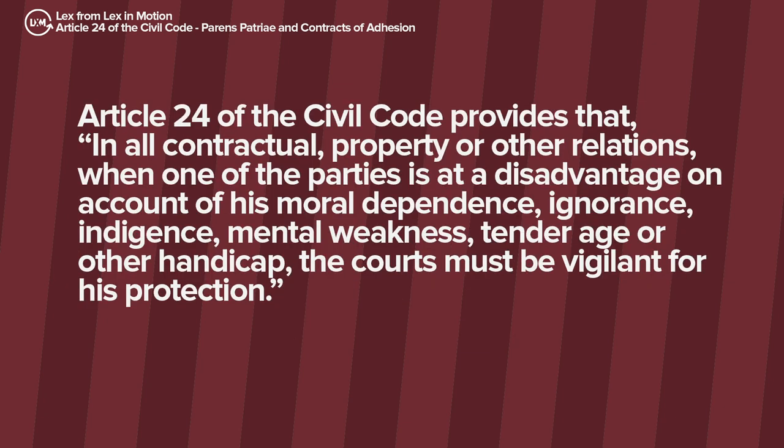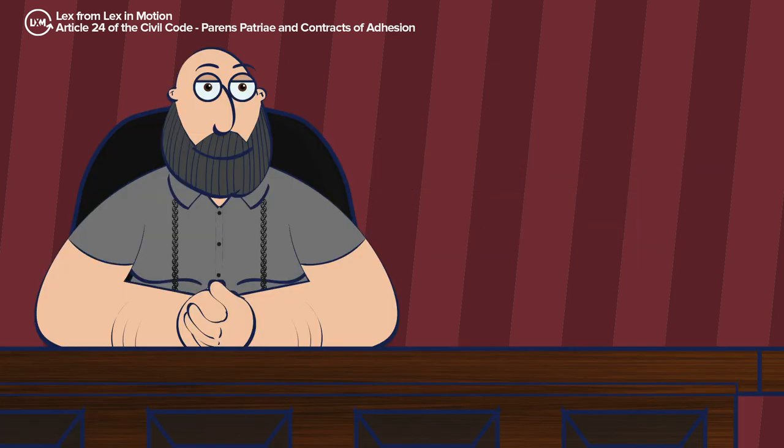Article 24 of the Civil Code provides that in all contractual, property, or other relations, when one of the parties is at a disadvantage on account of his moral dependence, ignorance, indigence, mental weakness, tender age, or other handicap, the courts must be vigilant for his protection. This is a relatively short provision, kapatid, and with all honesty, hindi talaga ito tinatalakay sa persons and family relations. Itinuturing itong reading matter — things that you're expected to read and study on your own, and to a certain extent, something that's nice to know but not much use within the course.